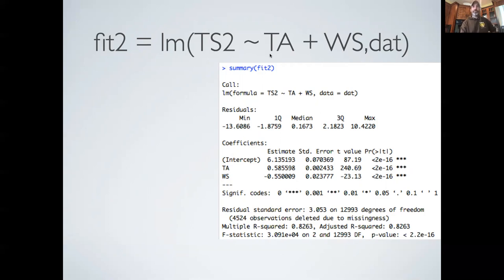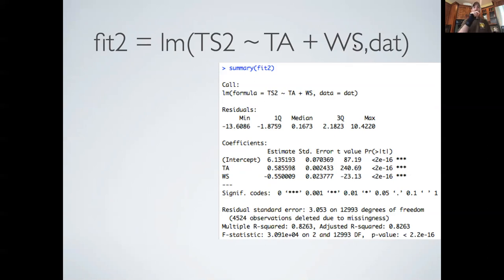The syntax for adding a second variable is just additive — TA plus wind speed. That implies to R that I want the model that has an intercept, a slope for TA, and a slope for wind speed. The intercept is always there by default; if you want to get rid of it you have to put a minus one in the model, which means drop the intercept term. The assumption of normal residual error is also built into the linear model as a default.